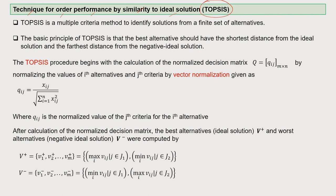TOPSIS is a multiple criteria method which helps to identify solutions from a finite set of alternatives — where your alternatives are known, say 6, 8, or 10 finite numbers. The basic principle is that the best alternative should have the shortest distance from the ideal solution — the alternative which brings you very close to the ideal solution — and the furthest distance from the negative ideal solution.